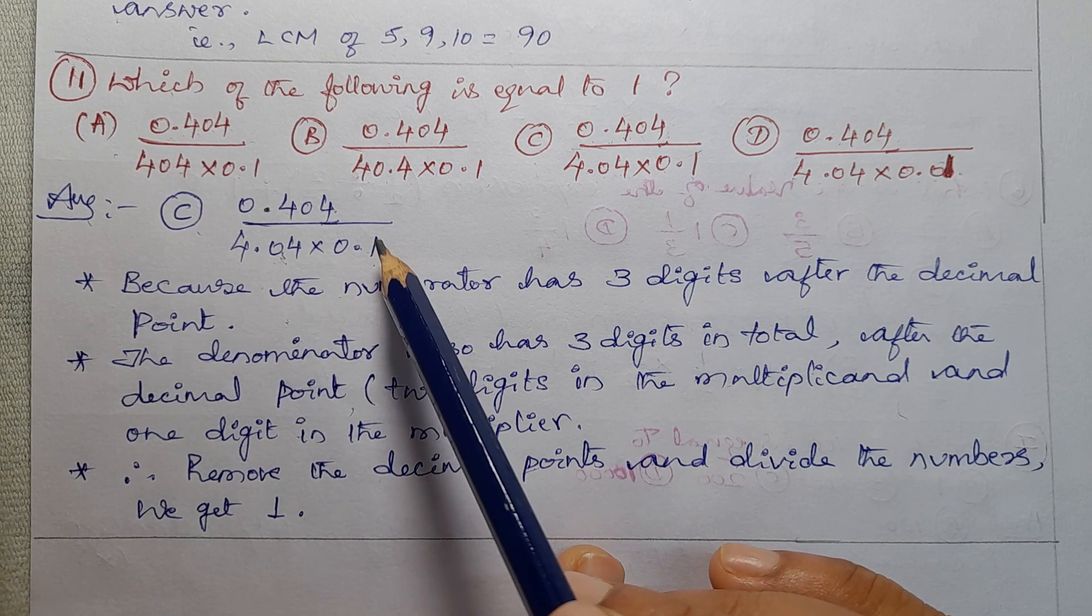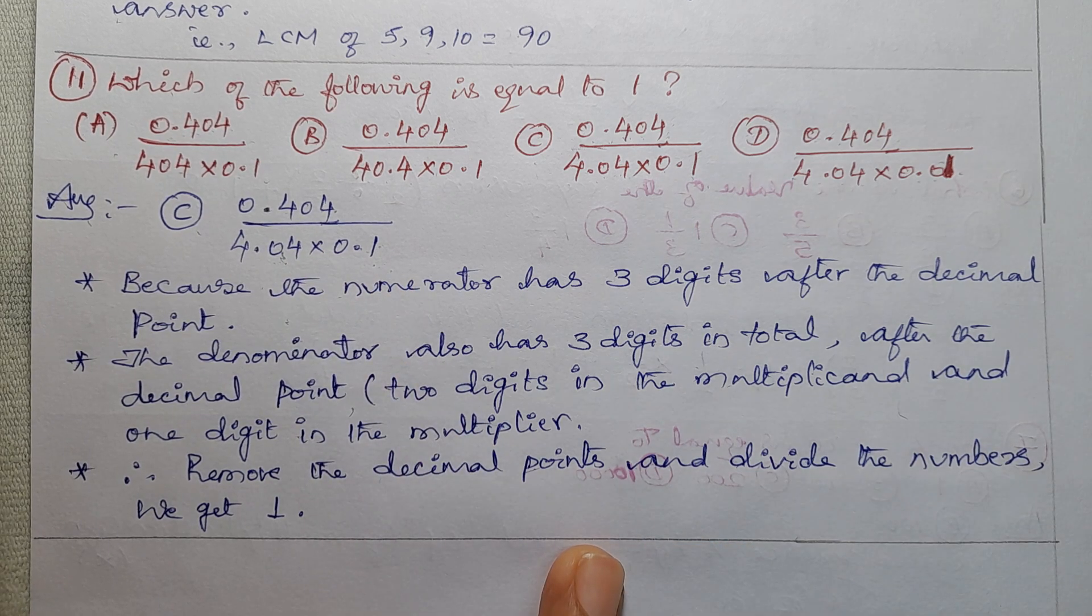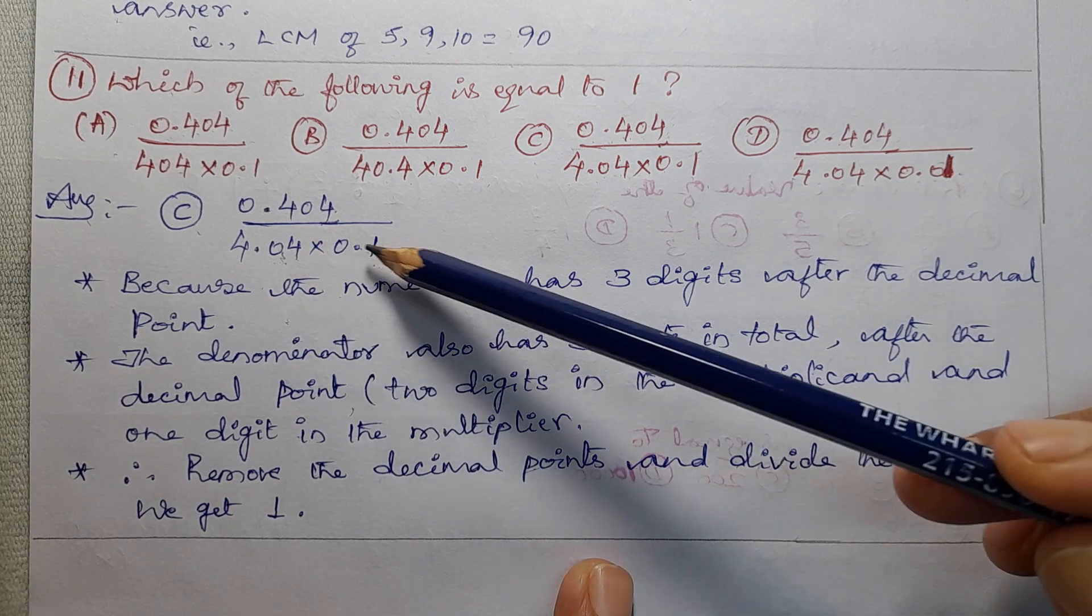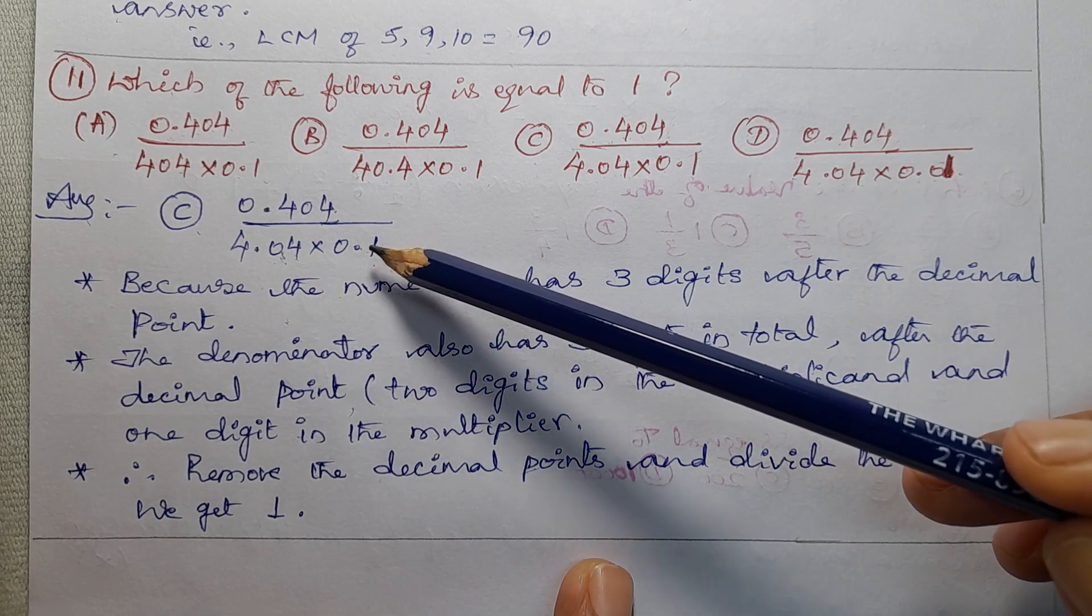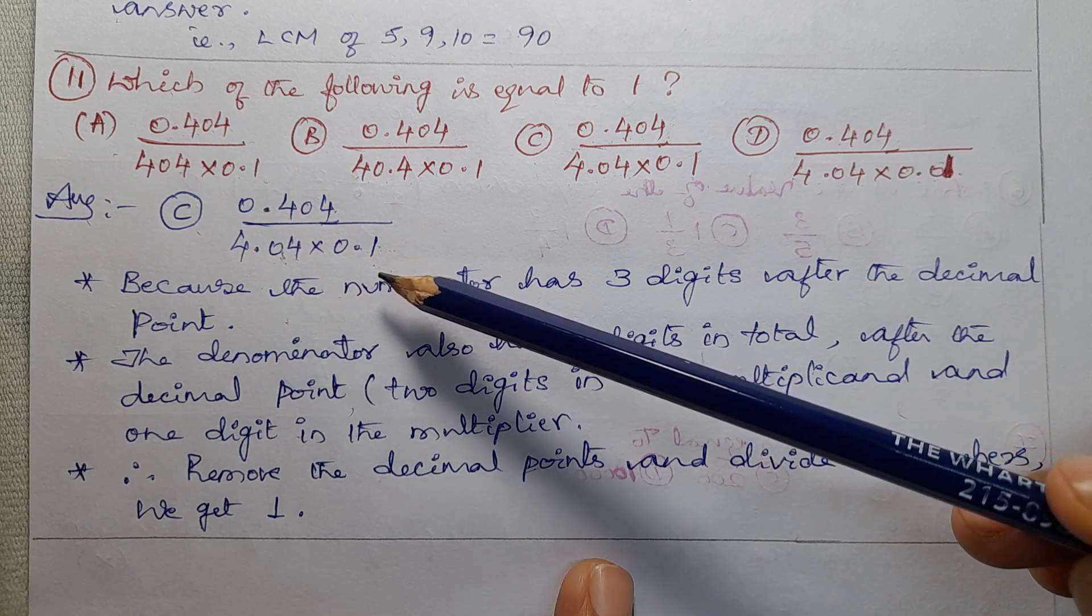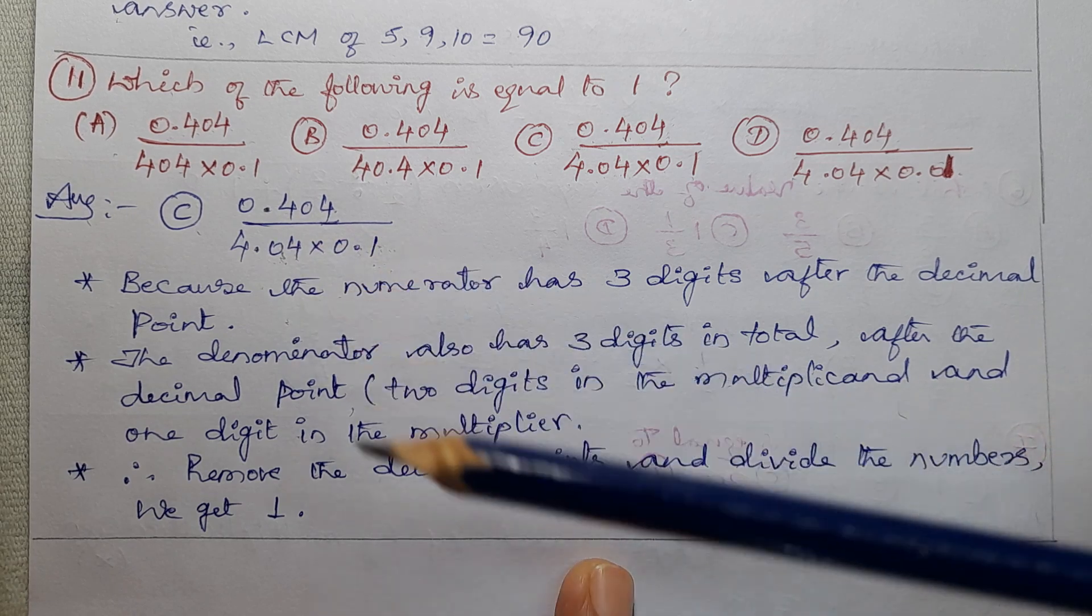This is the multiplicand, and this one is the multiplier. 1 digit in the multiplier. So, multiplicand, 2 digits. Multiplier, 1 digit. So, totally in the denominator, after the decimal point, how many digits? 3 digits.